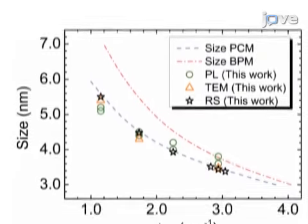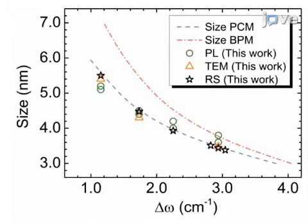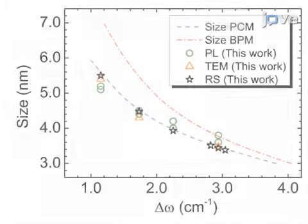Ultimately, Raman spectroscopy is used to show that it is possible to determine the nanoparticle size distribution in a fast, reliable, and non-destructive way. The main advantage of this technique over existing methods like transmission electron microscopy and X-ray diffraction is that Raman spectroscopy gives quick and reliable results in a non-destructive way and is available on demand in most laboratories.